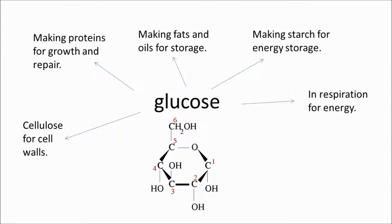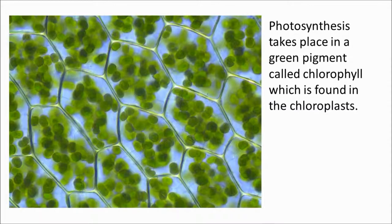In most cells, you find structures called chloroplasts, which contain the green pigment chlorophyll. This is the site of photosynthesis — this is where the photosynthesis reaction takes place.